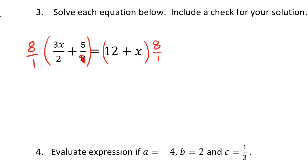Now, when I do that, this becomes 8 times 3x over 2 plus 8 times 5 over 8. And on the other side, it equals 12 times 8 plus 8x.